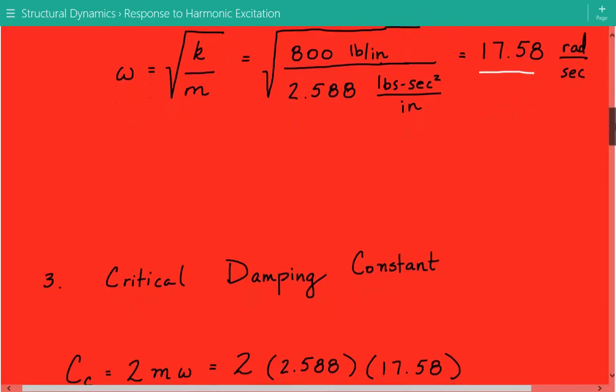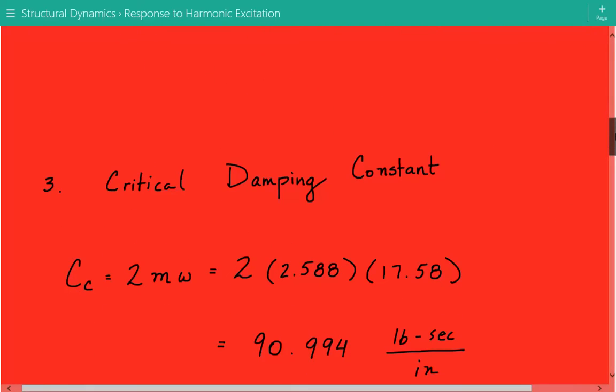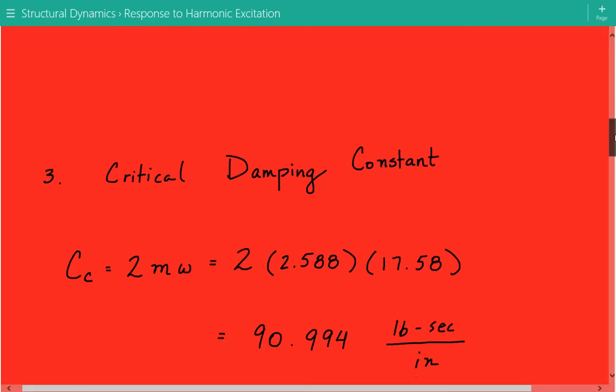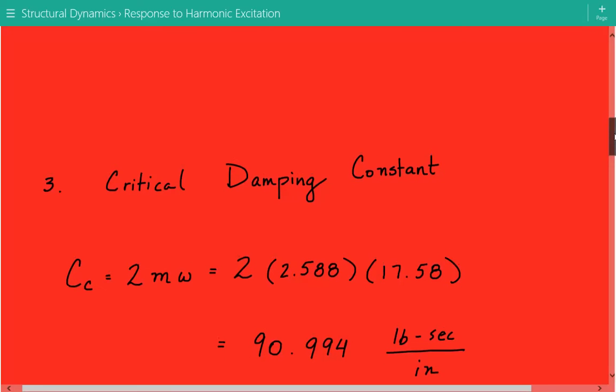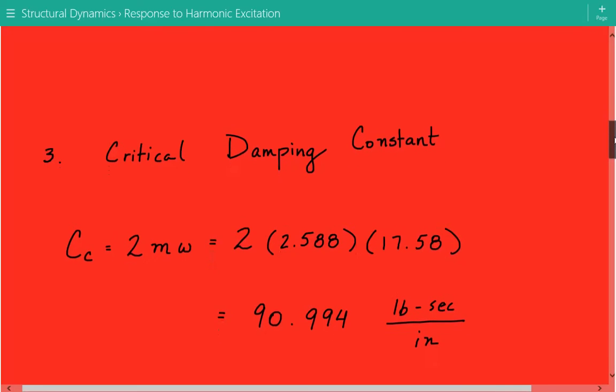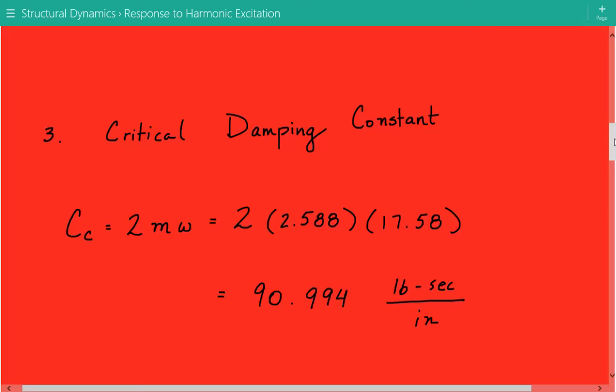After this, we'll calculate the critical damping constant C_c. C_c equals 2 times mass times the circular natural frequency. So our critical damping constant equals 90.994 pounds second per inch.